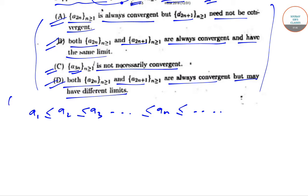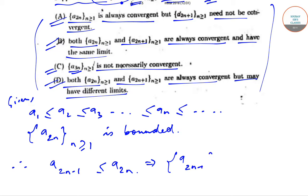Also, a_{2n}, where n is greater than or equal to 1, is bounded. Now we can definitely write that a_{2n-1} ≤ a_{2n}. This implies that a_{2n-1} is bounded.